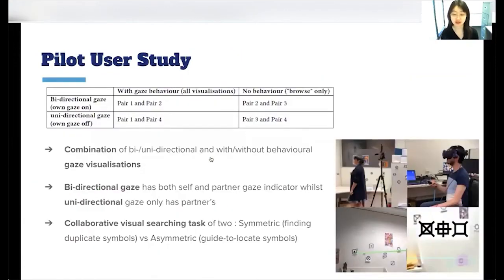As an exploratory study, we paired participants to test the prototype system under four conditions that are combinations of two factors: gaze behaviors on and off, and own-gaze indicator on and off, which we define as bi- or unidirectional. The participants also switched their roles after trying each allocated condition, leading to four collaborative task sessions per pair. The order of conditions was counterbalanced.